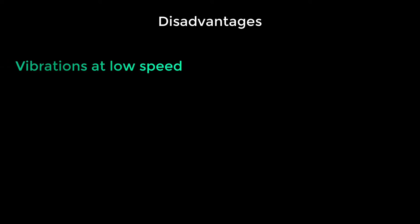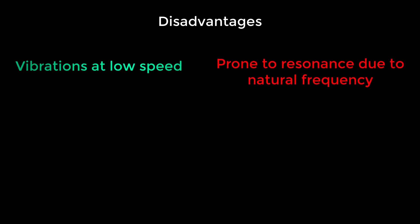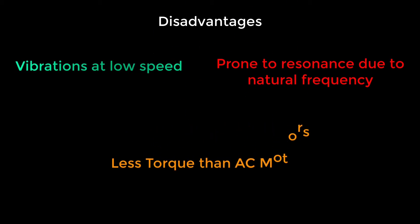Moving on to the disadvantages of the brushless direct current motor. When it is operated at low speed, slight vibrations occur; however, the vibrations do reduce when operated at high speed. Due to the inherent natural vibration frequency of the brushless DC motor, sometimes the natural frequency can match the vibration frequency of the body or plastic parts of the machinery it is in, resulting in resonance. Its final disadvantage is that it has less torque compared to its counterpart AC motors.